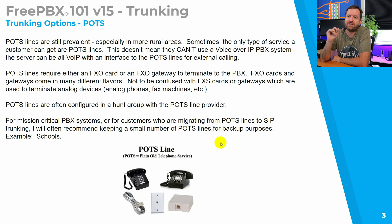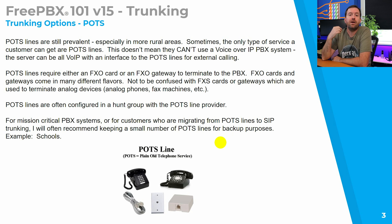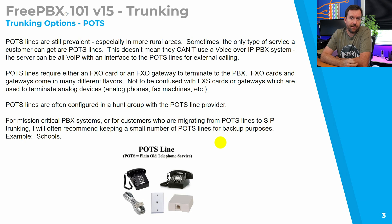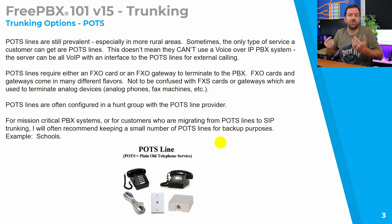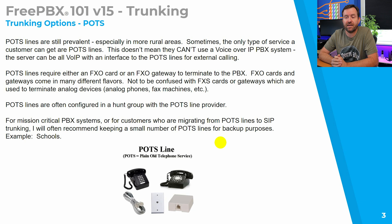Starting off with POTS: POTS lines are still around today, especially in rural areas. If you have a local phone provider, sometimes you can't even port numbers away from those providers because if a provider is in a rural enough area, it costs SIP trunking companies a lot of money to have a presence in that area — to have the ability to port out a specific area code and prefix. So unless there's enough business, sometimes SIP trunking providers cannot port numbers away from super rural areas, and POTS lines may be the only way to get trunking.